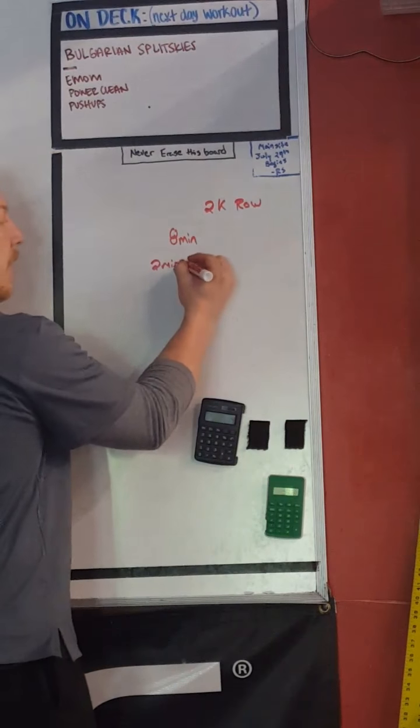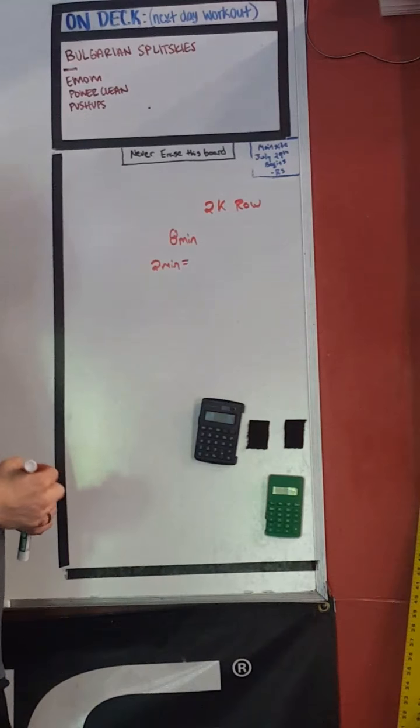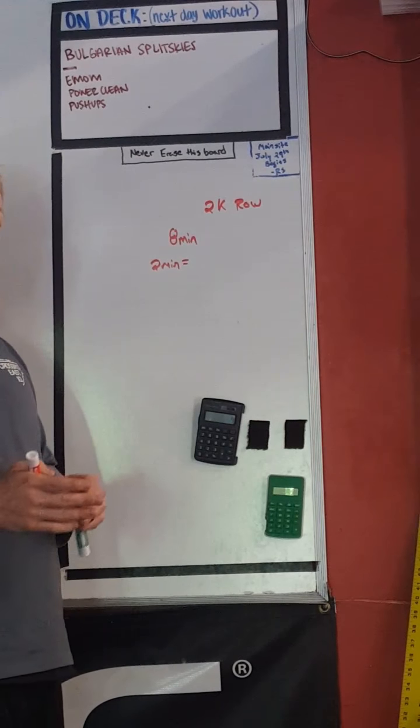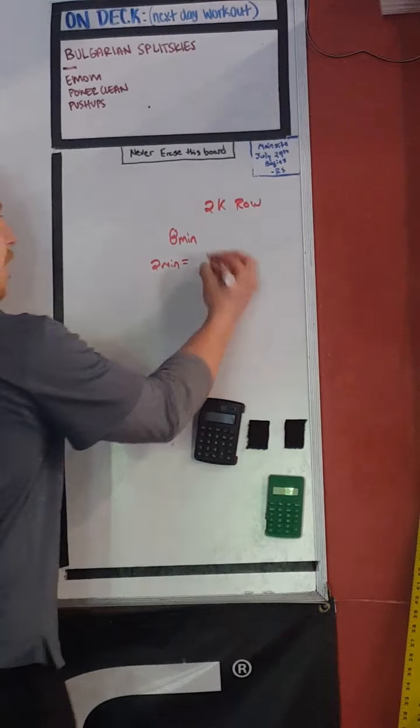Now that we have two minutes, how many seconds are in two minutes? 60 seconds plus 60 seconds makes 120 seconds.